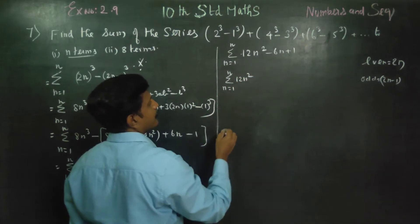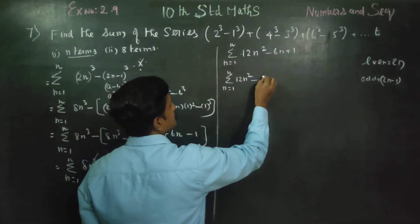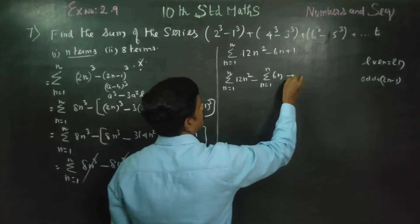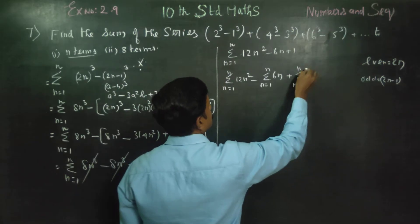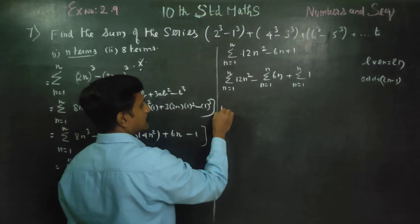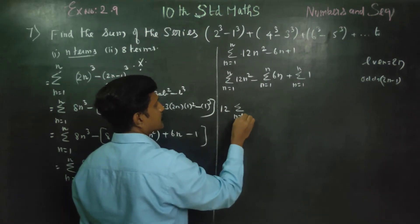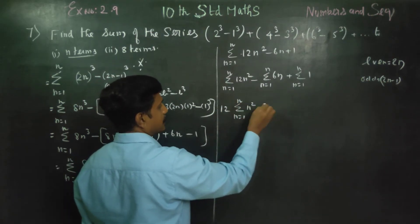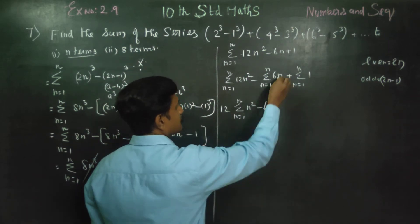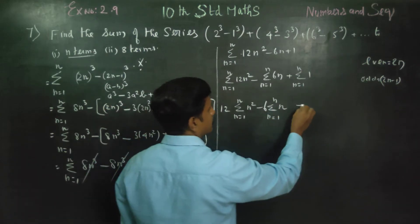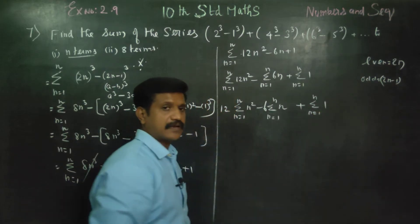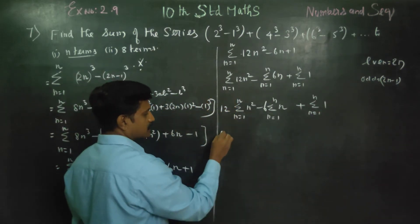This becomes: 12 times sigma n equals 1 to n of n squared, minus 6 times sigma n equals 1 to n of n, plus sigma n equals 1 to n of 1. We separate the sigma into three parts.